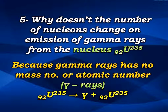So in the equation for uranium-92 emitting gamma rays, the product is the same uranium nucleus unchanged, because gamma rays carry no mass and no atomic number away from the nucleus.